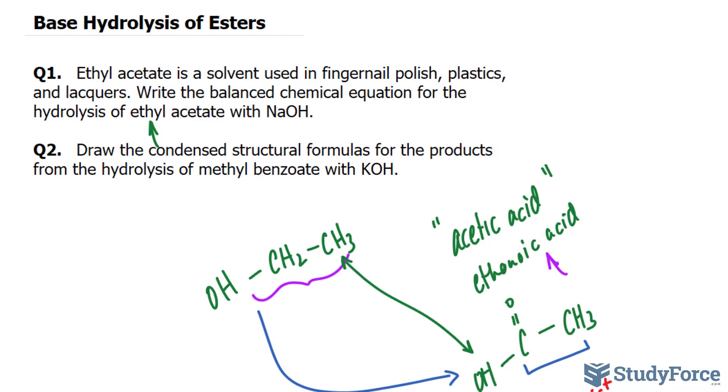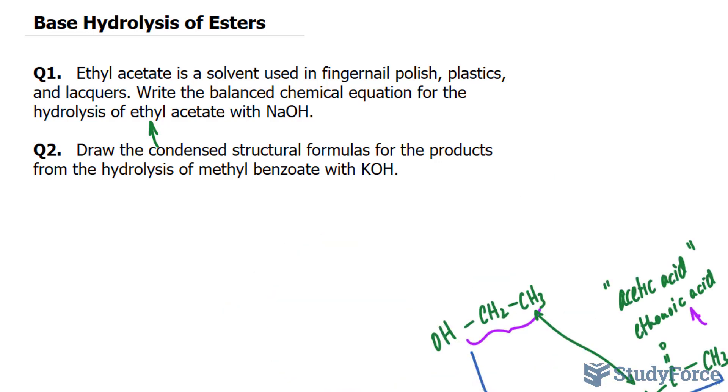Let's move on to question number two. Draw the condensed structural formulas for the products from the hydrolysis of methylbenzoate with potassium hydroxide. So let's go ahead and figure this out. We have methylbenzoate, and this is what it looks like. You have a benzene molecule. That's a six-carbon ring,